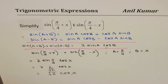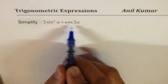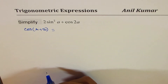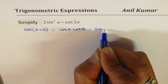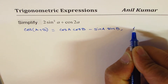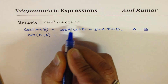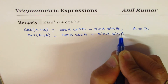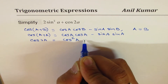Let's take a few more. The next one is 2 sin²a + cos 2a. I'd like to remind you of the double angle formula for cos 2a. Starting from cos(a + b) = cos a cos b − sin a sin b, if we substitute a = b, we get cos 2a = cos²a − sin²a.